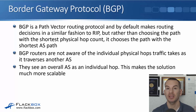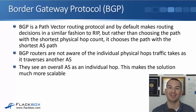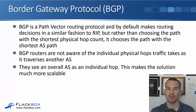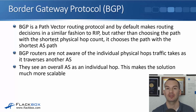BGP is a path vector routing protocol. By default it makes routing decisions in a way that is similar to RIP which uses hop count, but rather than choosing the path with the shortest physical hop count router by router, it chooses the path with the shortest AS path — the least number of ASes from source to destination.